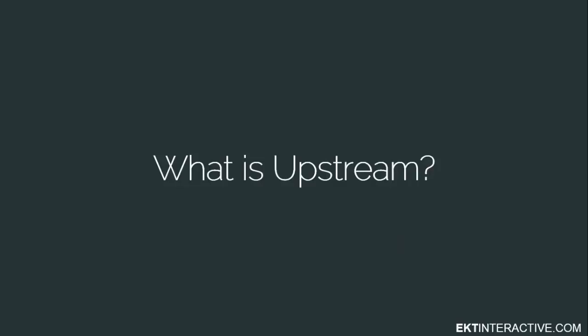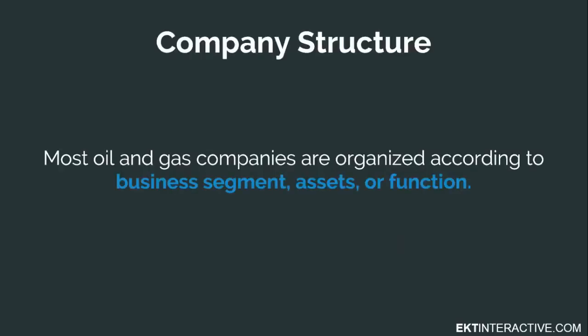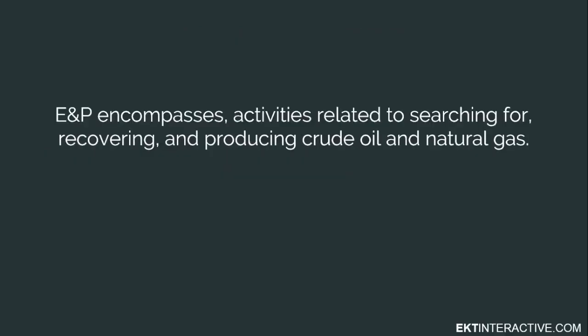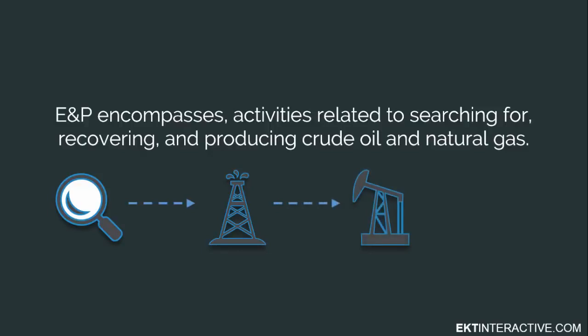So, what is upstream? Most oil and gas companies are organized according to business segment, assets, or function. The upstream segment of oil and gas is also known as exploration and production, or E&P, because it encompasses activities related to searching for, recovering, and producing crude oil and natural gas.